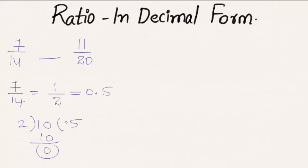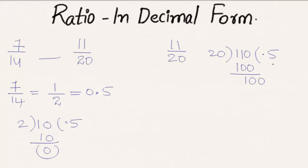Coming to the next ratio: 11/20. Dividing 11 by 20, we write a decimal point to get 110. 20 times 5 is 100, and 110 minus 100 is 10. Adding 0 gives 100, and 20 times 5 is 100, remainder 0. So 11/20 equals 0.55.